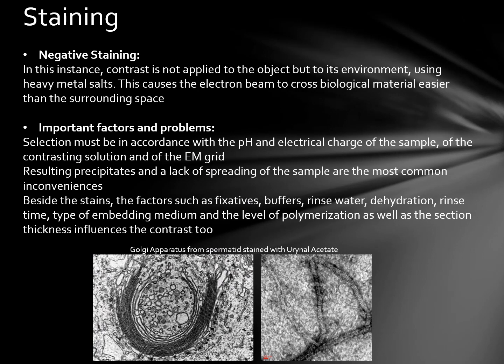Negative staining is normally used in scanning transmission electron microscopy. In this instance, contrast is not applied to the object but to its environment using heavy metal salts, causing the electron beam to cross biological material easier than the surrounding space. Important factors during staining include selection in accordance with the pH and the electrical charge of the sample, as well as the contrasting solution and the EM grid. Resulting precipitates and lack of spreading of the sample are the most common inconveniences. Besides the stains, fixatives, buffers, rinse water, dehydration steps, rinsing time, type of embedding medium, level of polymerization, and sectioning thickness all influence the contrast.